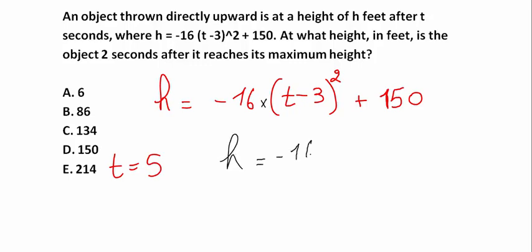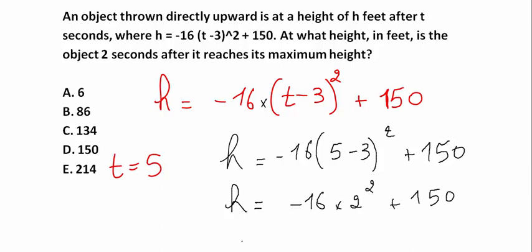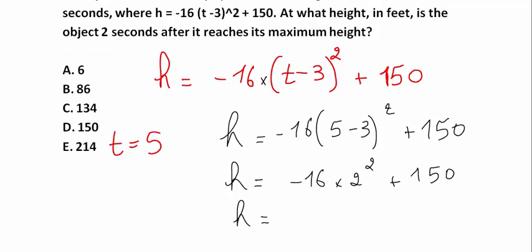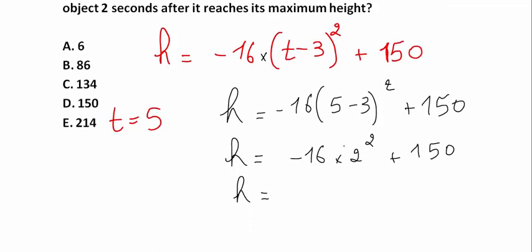h is equal to minus 16 times 5 minus 3 square plus 150. h equals minus 16 times 2 squared plus 150. h equals minus 16 times 4, which is minus 64 plus 150, which equals 86. So it's answer B.